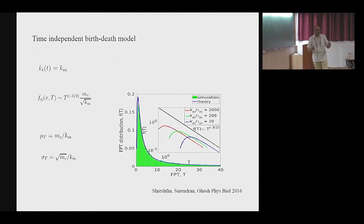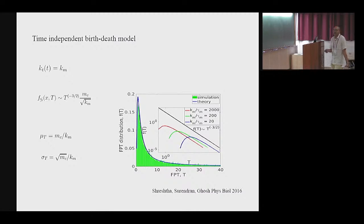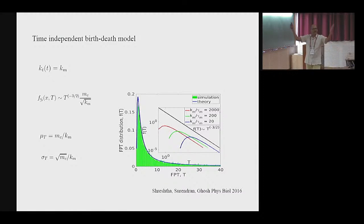As a sanity check, if I take the transcription rate to be constant — the typical birth-death model — it is easy to compute the first passage time distribution. It has a tail of t to the power minus 3/2, which can also be matched with experimental simulations. The mean first passage time scales as mc over km. Remember km is our transcription rate. This is consistent: the more I set the threshold, the more time it takes to reach there; if my transcription is more, it is more likely to hit that boundary.